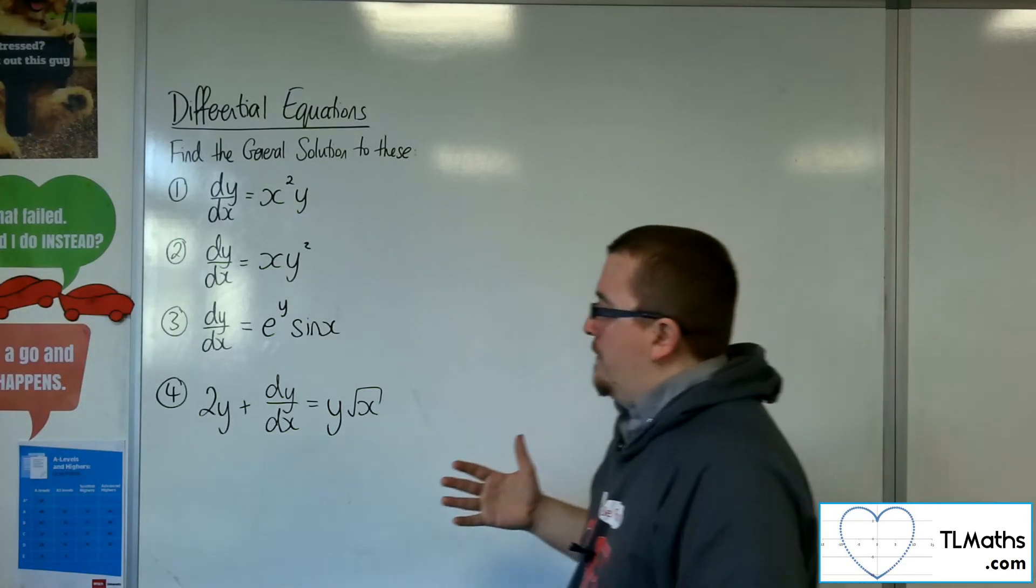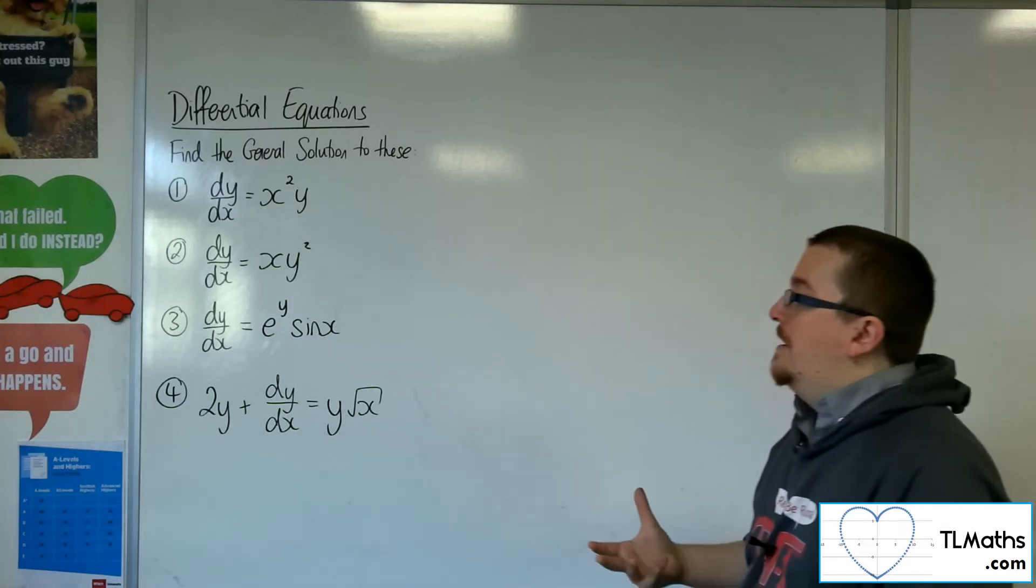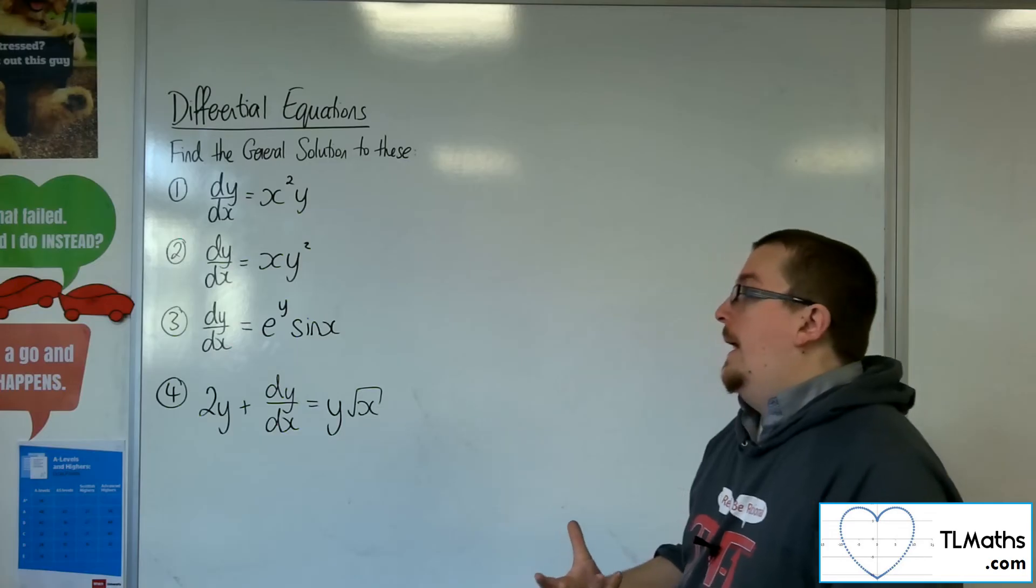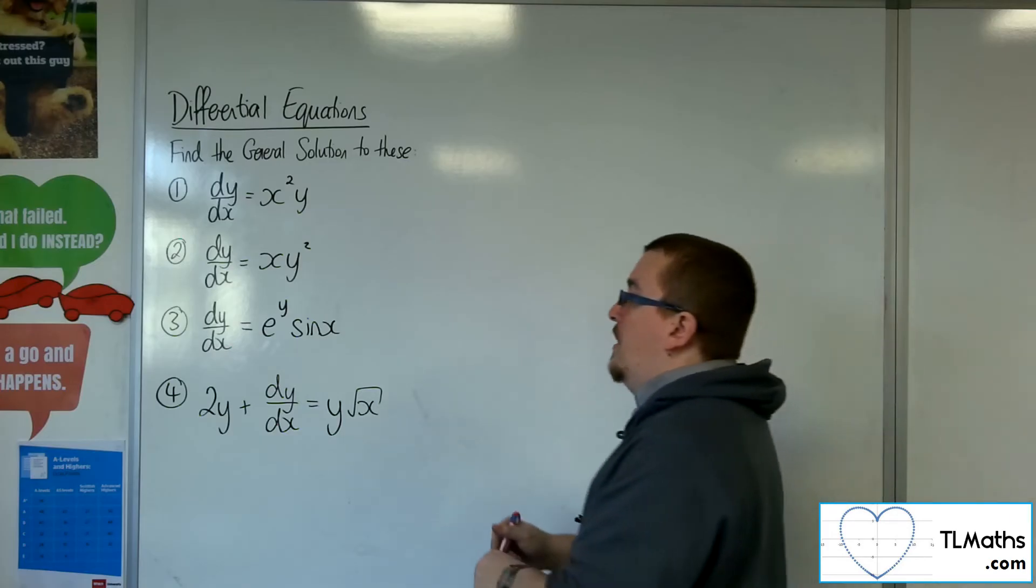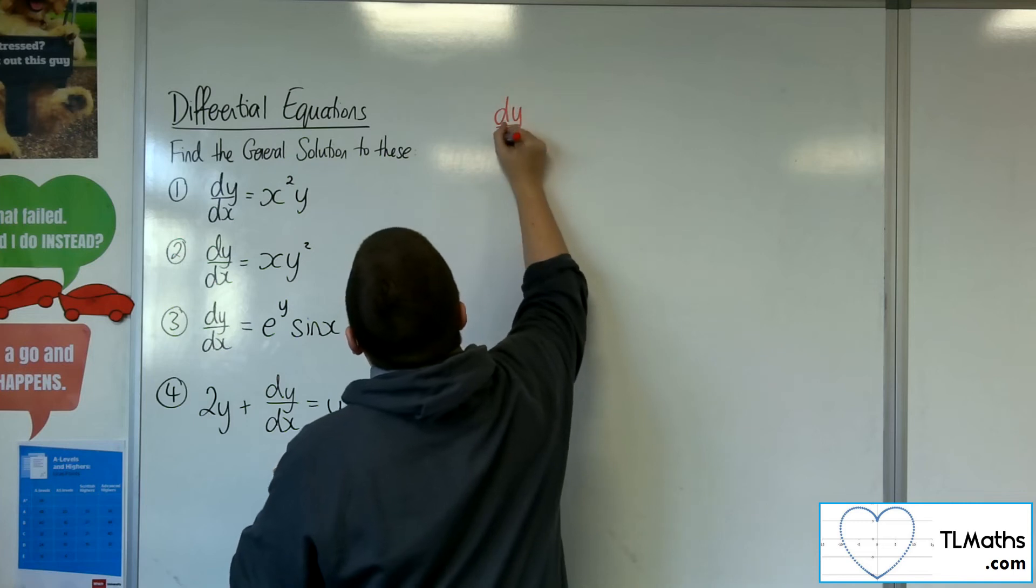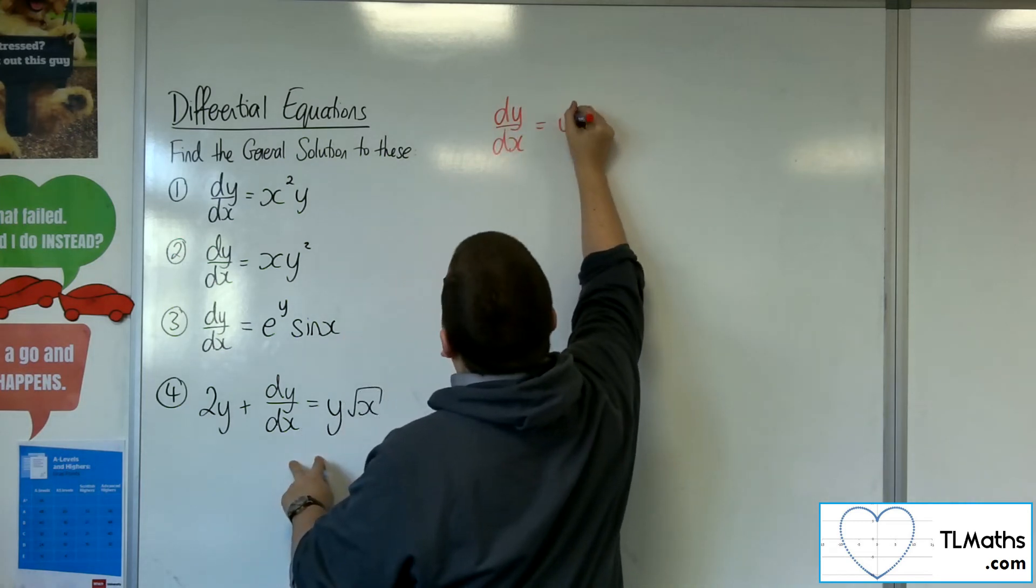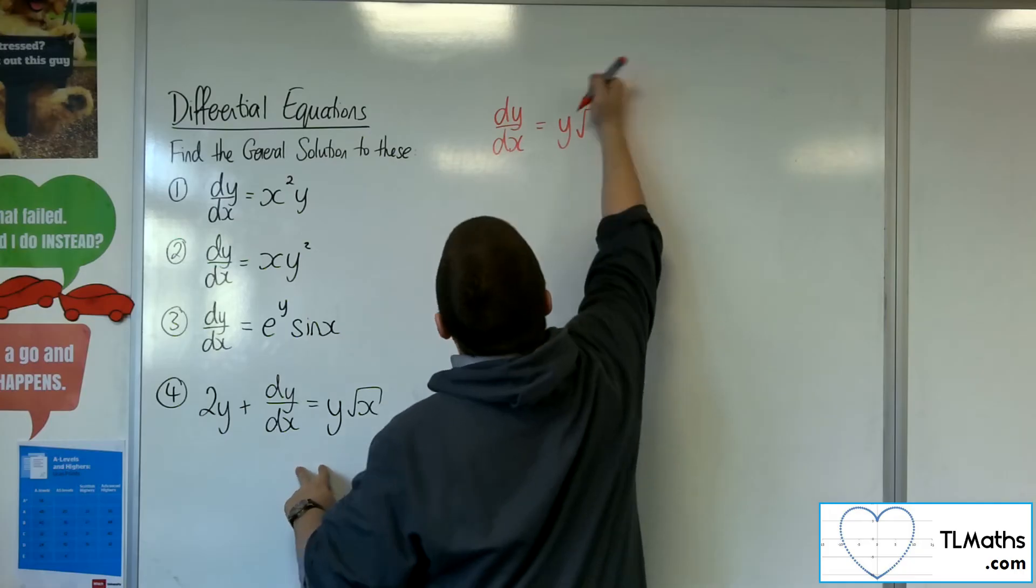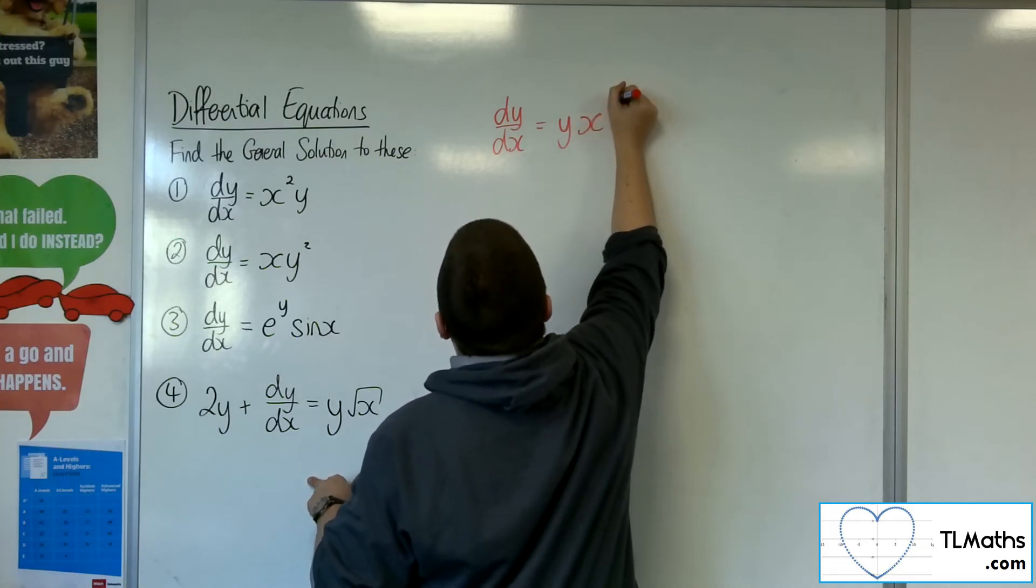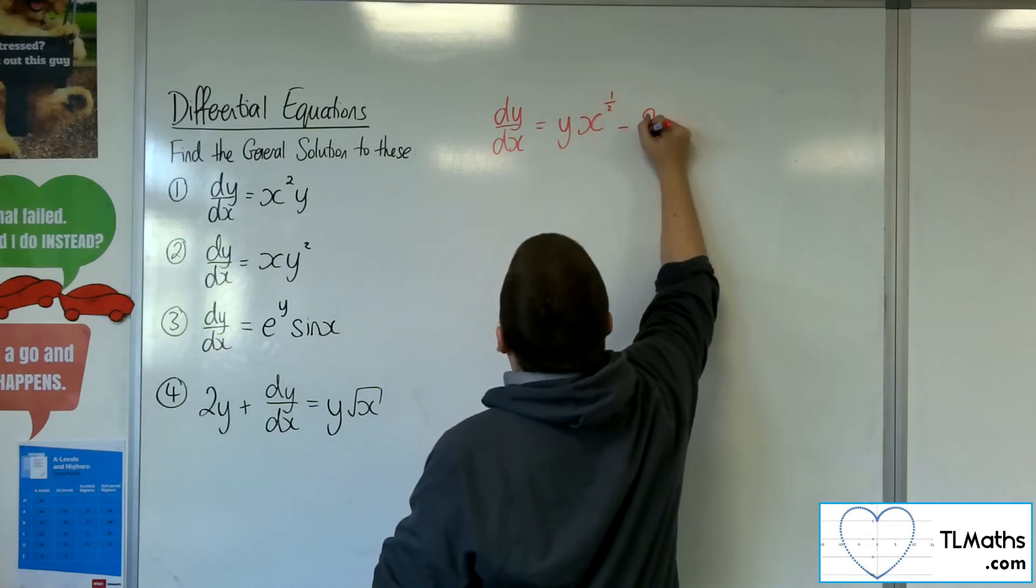Now, number 4 is a little bit different, or it looks different, because we've got that 2y on the left-hand side. What I'm going to do is I'm going to subtract the 2y from both sides. That's really what we need to do to start off with. I'm going to write the root x, actually, as x to the half.